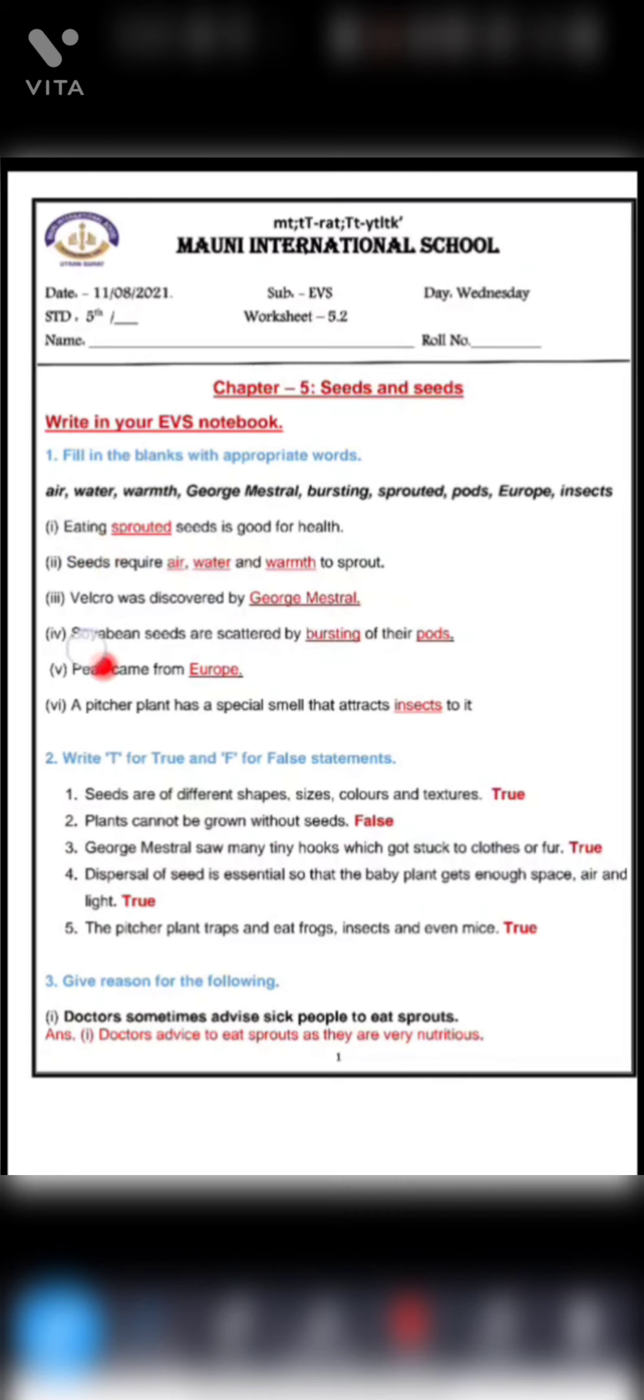First one, eating dashed seeds is good for health. So eating sprouted seeds. When seeds are sprouted, they give us more nutrition. Then second one, seeds require dash, dash and dash to grow.